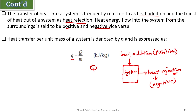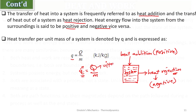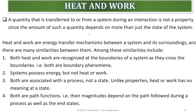Heat transfer per unit mass is denoted by small q, equal to Q divided by mass. Capital Q is the total heat content within a system. Dividing by mass gives the heat transferred per unit mass — this is the specific heat. In thermodynamics, dividing a property by mass gives the specific value of that property. Specific values are always in lowercase letters, while total quantities are in uppercase.